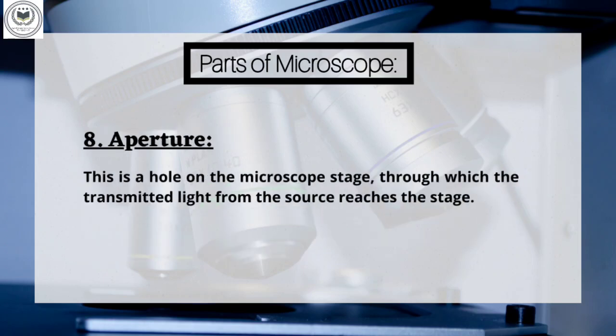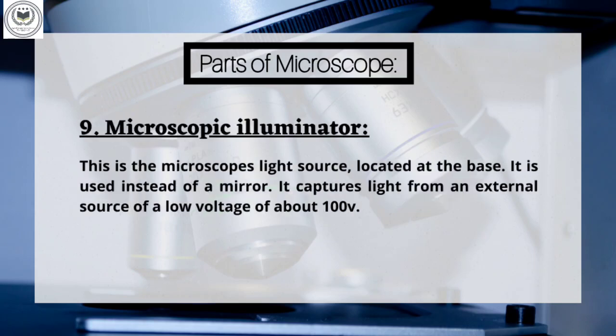Part 8: Aperture. This is a hole on the microscope stage through which the transmitted light from the source reaches the stage. Part 9: Microscope illuminator. This is the microscope's light source, located at the base. It is used instead of a mirror and captures light from an external source at a low voltage of around 100V.